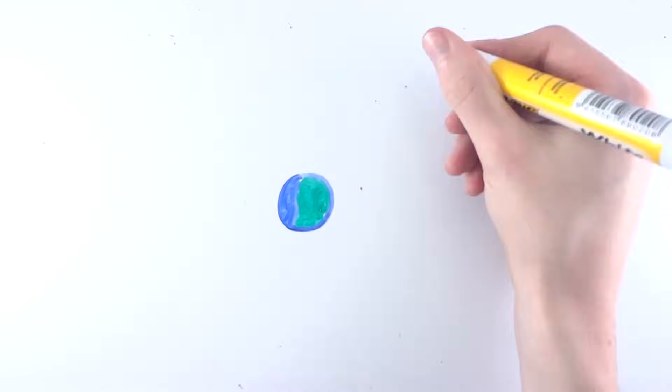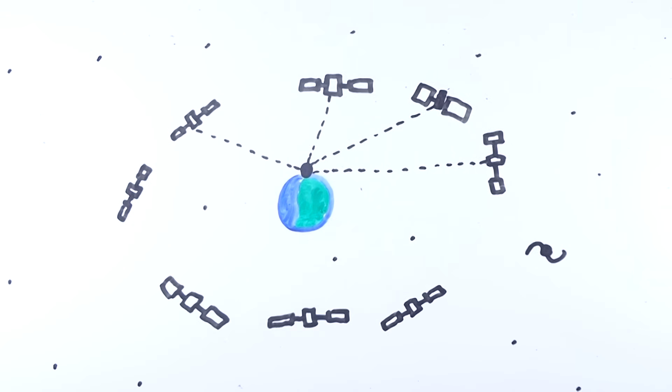GPS satellites are set up in such a way that from almost anywhere on the surface of Earth, you should have a direct line of sight of at least four GPS satellites. This is quite important on the basis that GPS point positioning requires at least four satellites to calculate three position coordinates and the clock deviation.